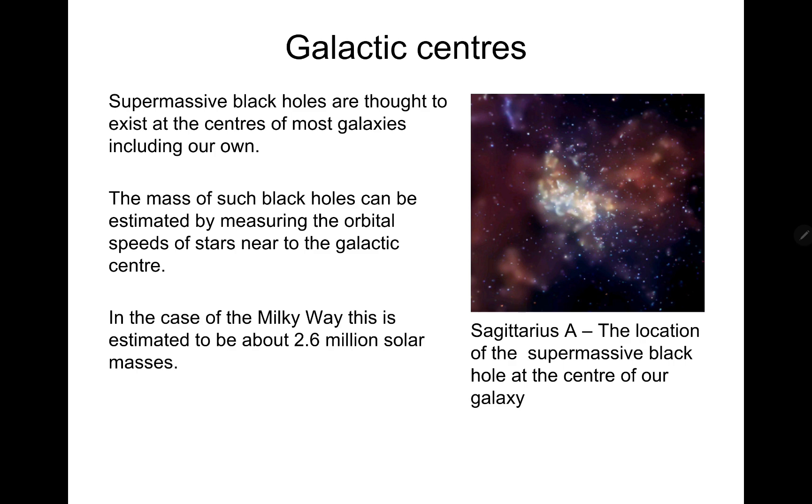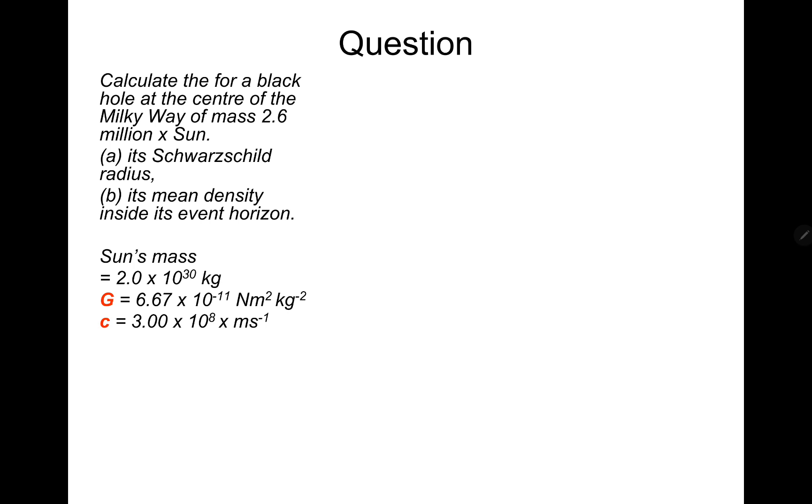Alright, let's do another question. So I'm going to pause and have a go at this one. So same again, relatively straightforward. Calculate for the black hole at the center of the Milky Way of mass 2.6 million times the mass of the sun. Firstly, the Schwarzschild radius and then the mean density inside its event horizon.